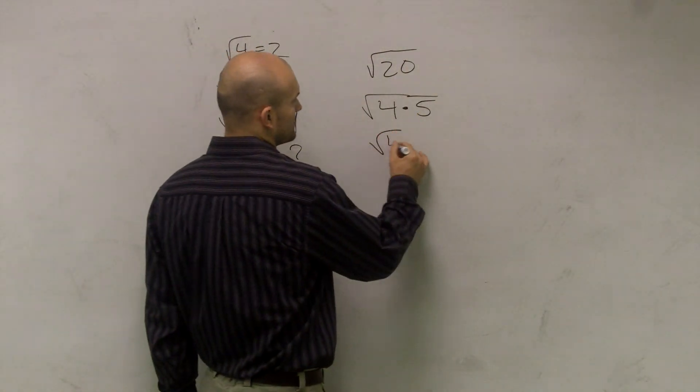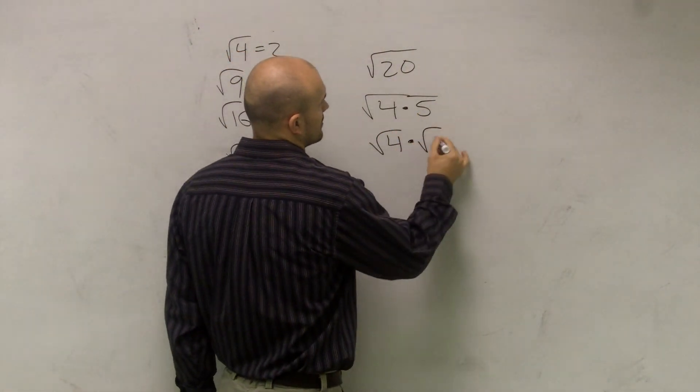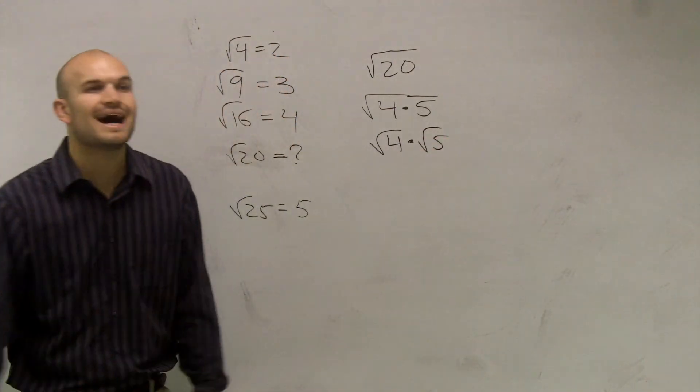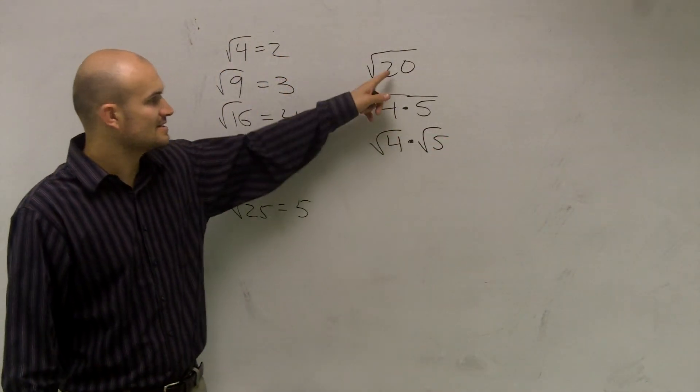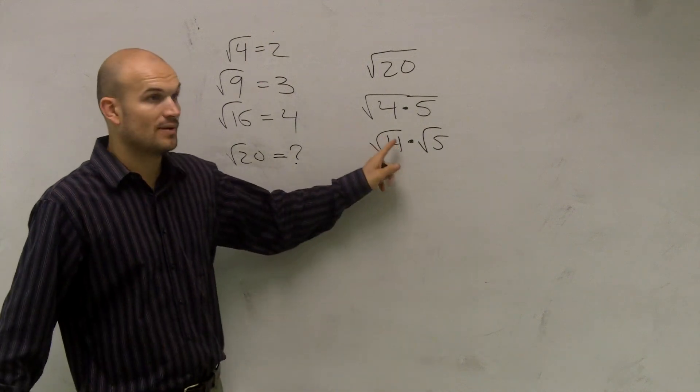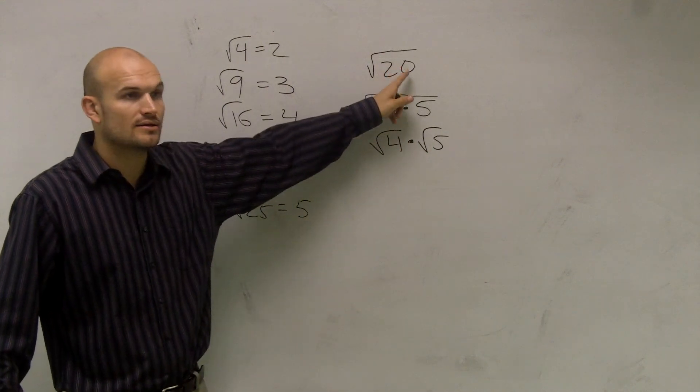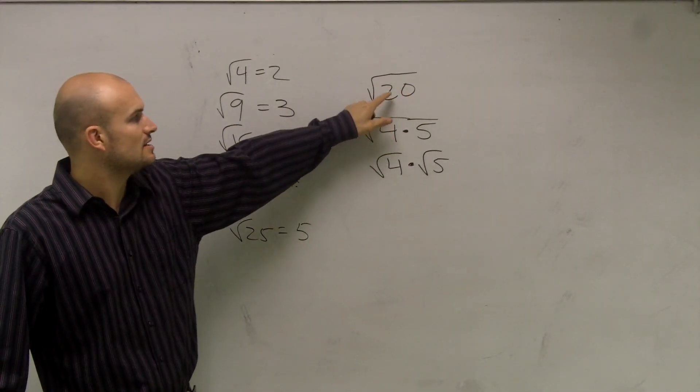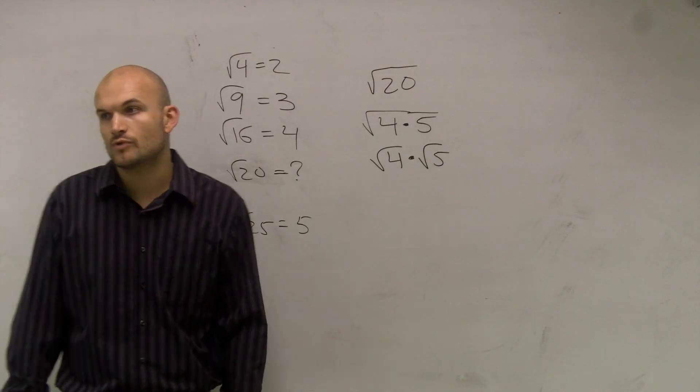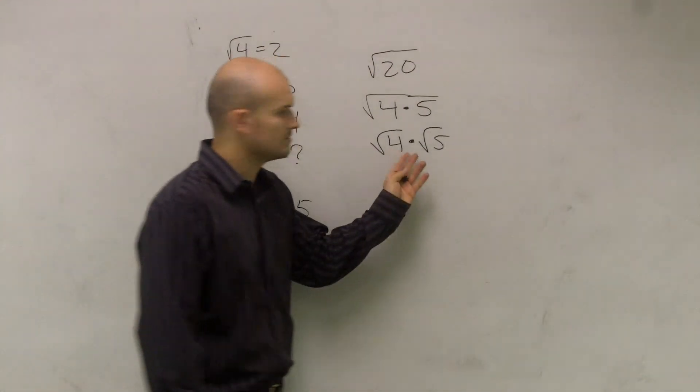The next thing you guys might want to disagree with me is I say that the square root of 4 times the square root of 5 is still equal to the square root of 20. Meaning you can multiply square roots and whatever their answer is, is still going to be under your square root called your radicand. Everybody agree with this?